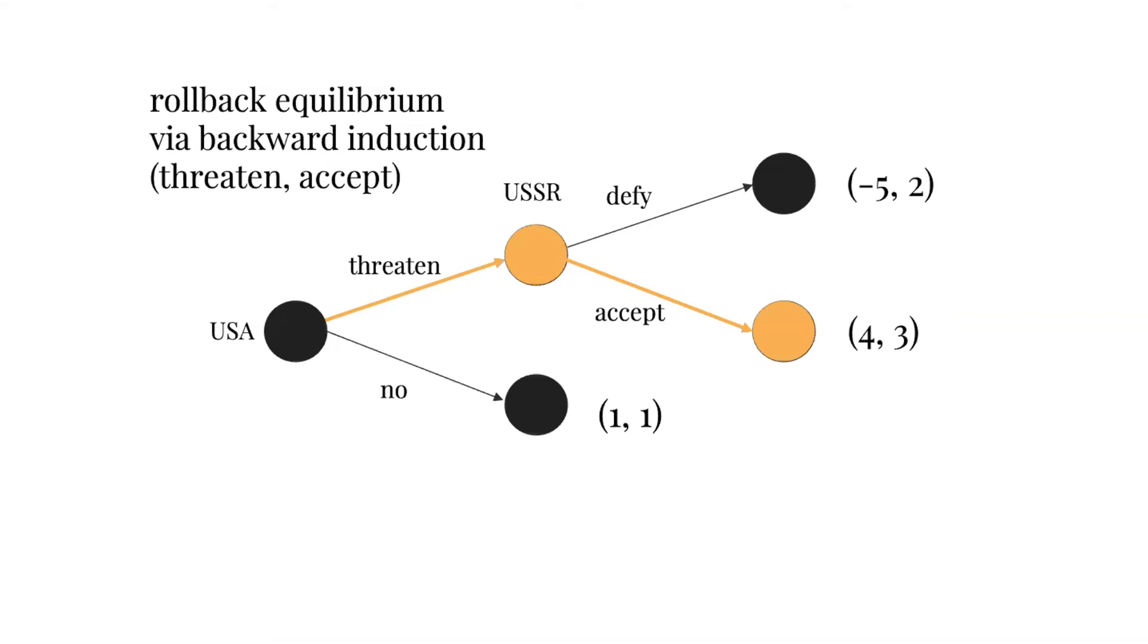Extrapolating backwards, if we say that because of Cuba's geographical proximity, the United States is likely to choose to act and engage in a strategy of brinkmanship to protect themselves from nuclear escalation, then it's likely they're going to assign a higher payoff to threaten than no, which is why four is bigger than one. Using rollback equilibrium, we've again obtained the end outcome, which is threaten accept.